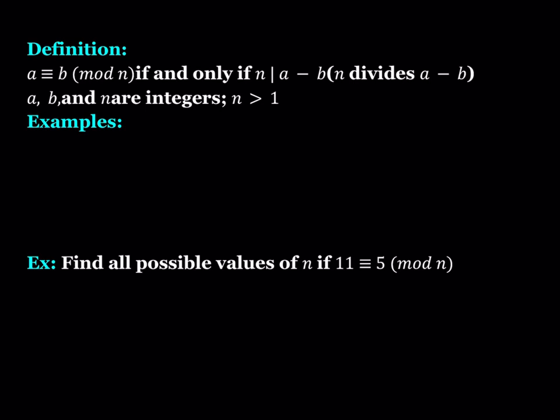Let's look at some examples. For example, I can say 5 is congruent to 2 mod 3 because 3 divides 5 minus 2. Because 5 minus 2 is equal to 3 and it's divisible by 3. You can also state that n divides a minus b as: a minus b is a multiple of n.